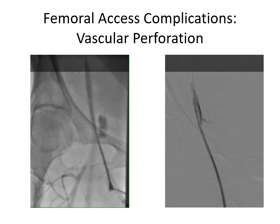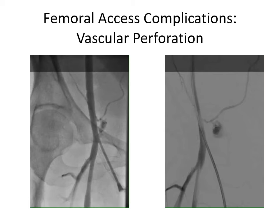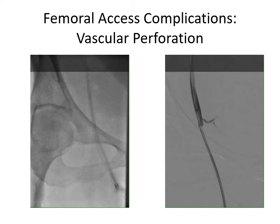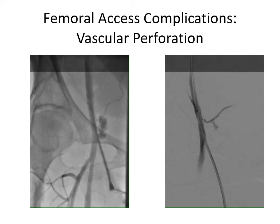Here we see an access complication in the form of vascular perforation in a 53-year-old woman with a BMI of 23 who presented with ACS. At the end of the case, upon taking the femoral angiogram, perforation of the inferior epigastric artery was noted, with contrast extravasation into the peritoneum. In the DSA films on the right, we can clearly see the origin of the hemorrhage. The injury presumably happened during micropuncture wire insertion into the femoral artery that inadvertently went into a small branch causing injury.